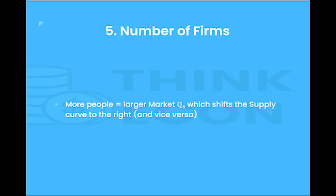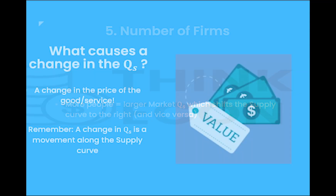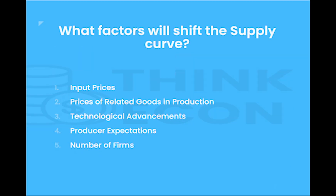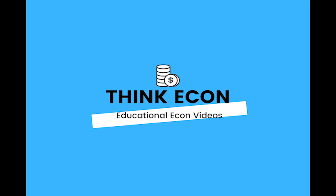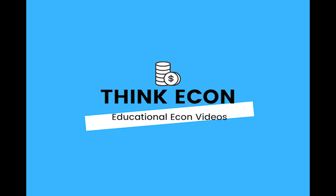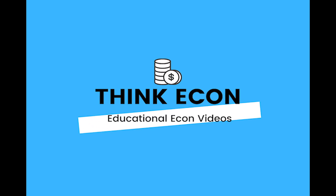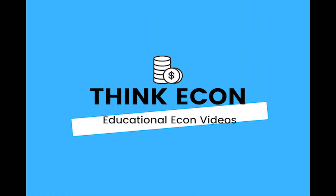To summarize everything we talked about in this video: a movement along the supply curve is caused by a change in the price of the good or service itself. A shift in the supply curve is caused by any of the five shift factors — input prices, prices of related goods in production, technological advancements, producer expectations, and the number of firms in the market. Now you know the difference between a change in quantity supplied, or moving along the supply curve, and a change in supply, or a shift in the entire supply curve.